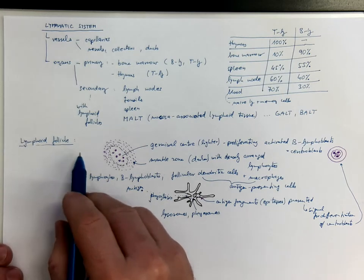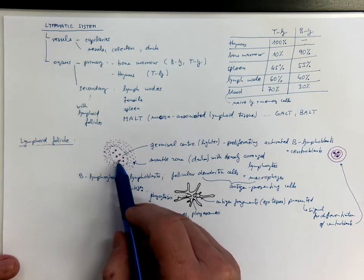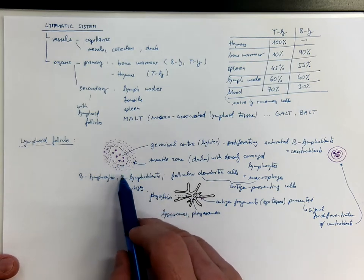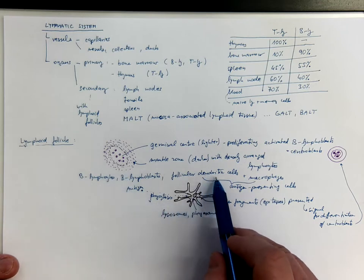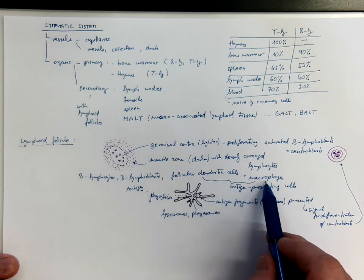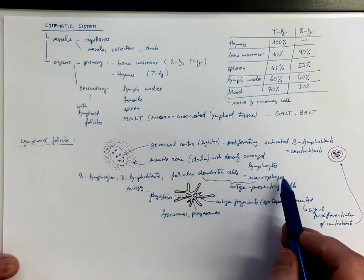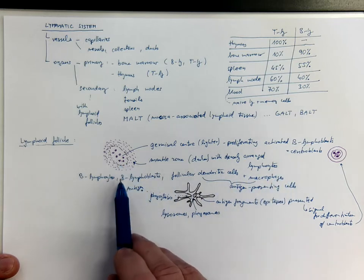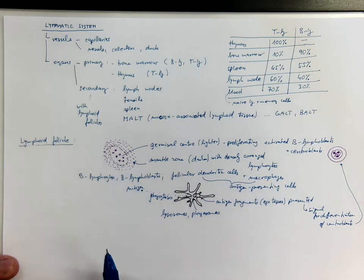So in lymphoid follicles, either lymph or blood is filtered. And the antigens processed by these follicular dendritic cells and macrophages are used for initiating specific immune response executed by B lymphocytes.